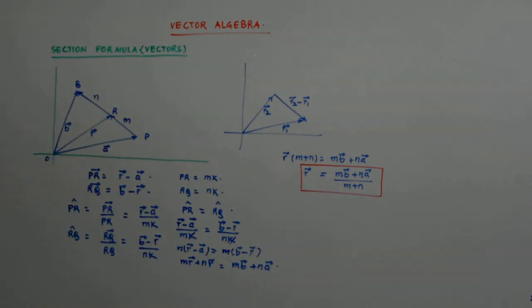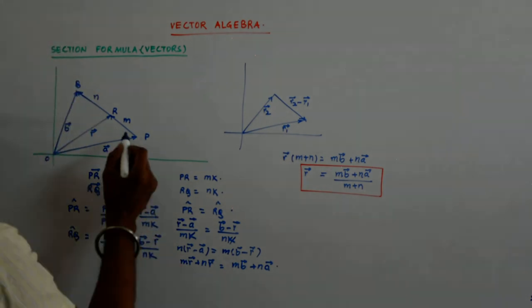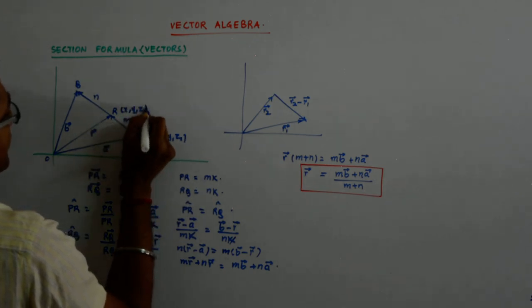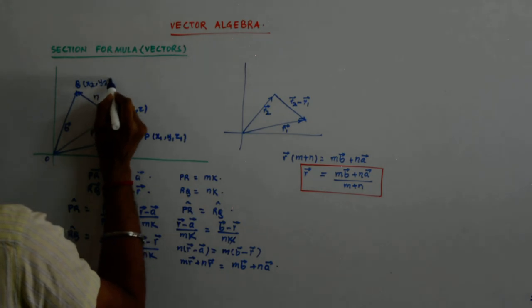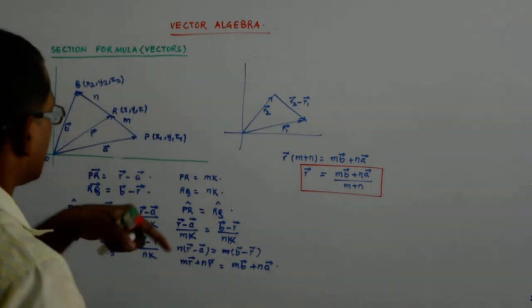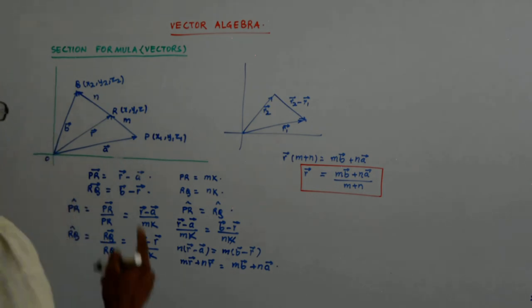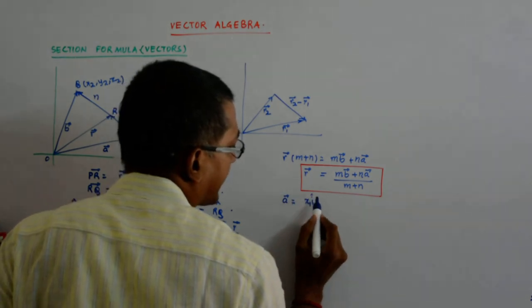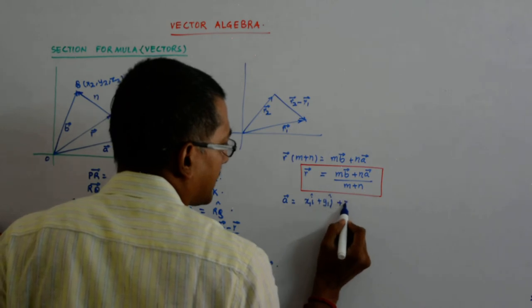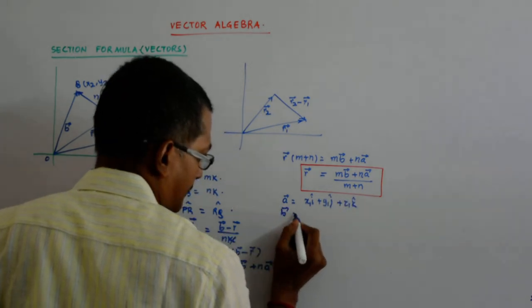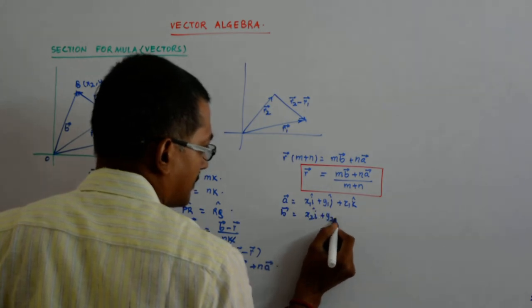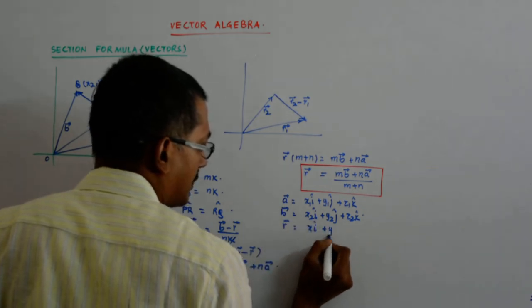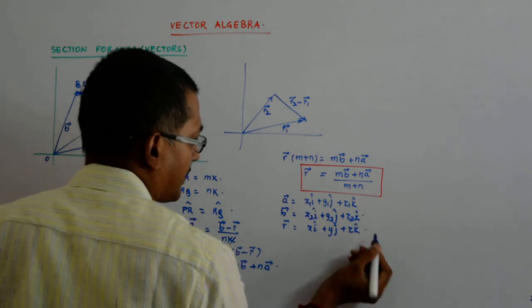Because if it is in 3D, this point is x1, y1, z1 say, this is x, y, z say, this is x2, y2, z2 say. So you just plug in the value. What will be a? A will be x1 i cap plus y1 j cap plus z1 k cap, x2 i cap, y2 j cap, z2 k cap, x i cap, yj cap, z k cap. What happens?